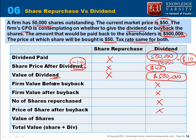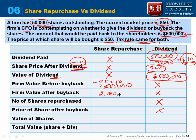For the buyback scenario: firm value before buyback is 50,000 shares multiplied by $50, which equals $2.5 million. The firm pays $500,000 to buy back shares, so the firm's value must decrease by $500,000. After the buyback, the firm value becomes $2 million.